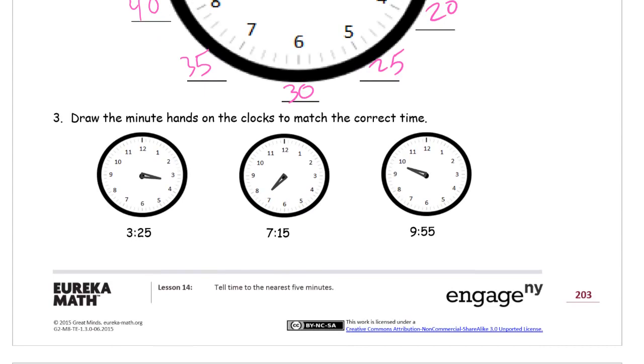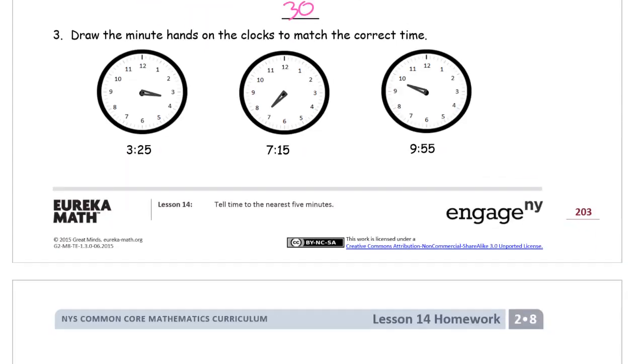Draw the minute hands on the clocks to match the correct time. Remember my trick, if you watched one of the earlier telling time videos, for drawing minute hands, I start at the number that I want and draw into the center of the clock. That way you're sure to get a clock hand that's the right length for minutes. And you'll notice the difference between minutes and hours. Sometimes it's hard to tell looking at some of these clocks, or pictures of clocks, really.